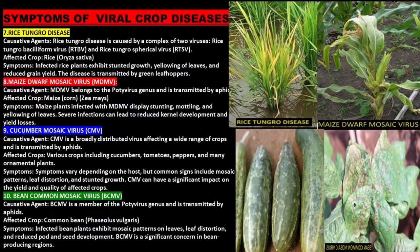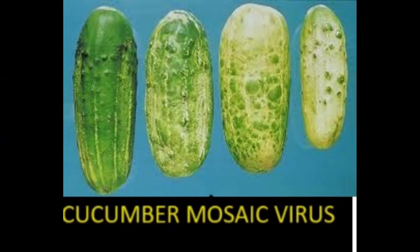Cucumber Mosaic Virus is transmitted by aphids. Affected crops include cucumbers, tomatoes, peppers, and many ornamental plants. Symptoms vary depending on the host, but common signs include mosaic patterns, leaf distortion, and stunted growth.